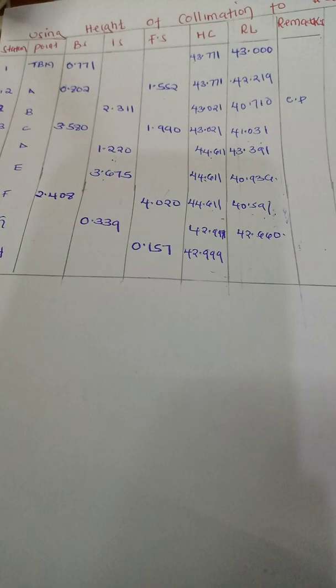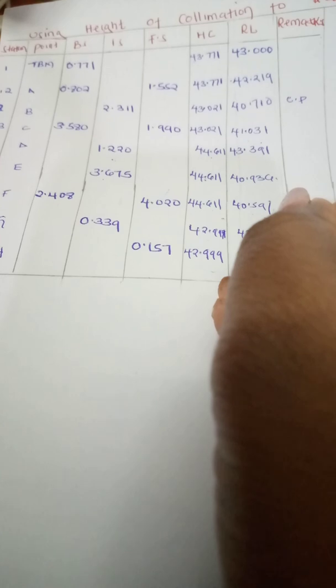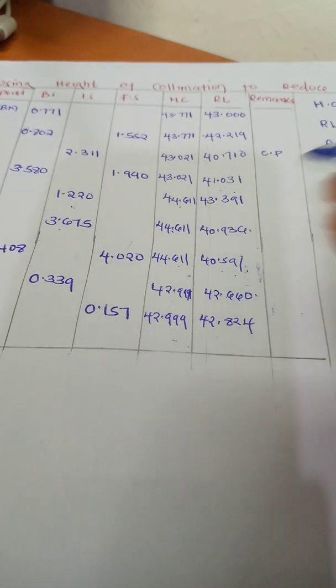The height of collimation remains 42.999. The reduced level at the next point will be the height of collimation minus the foresight, which is 42.999 minus 0.157, giving us 42.824.